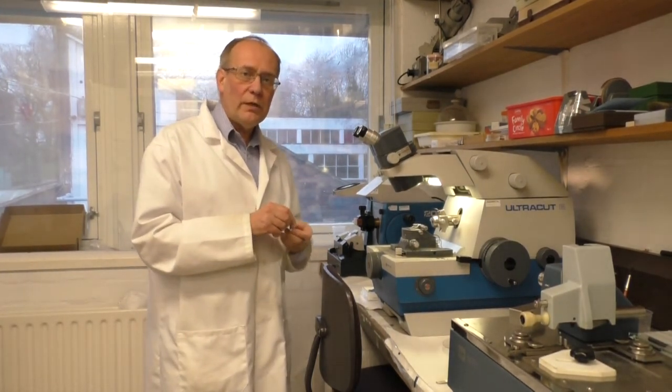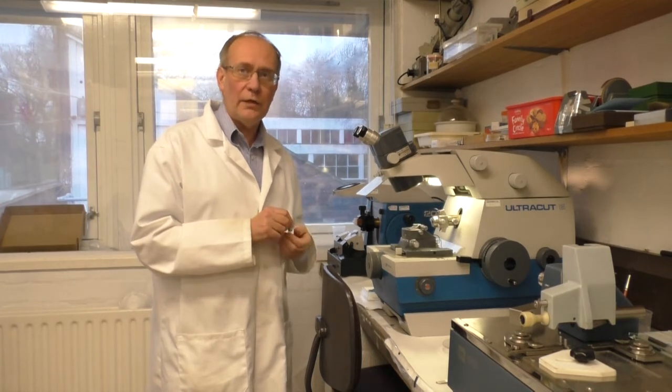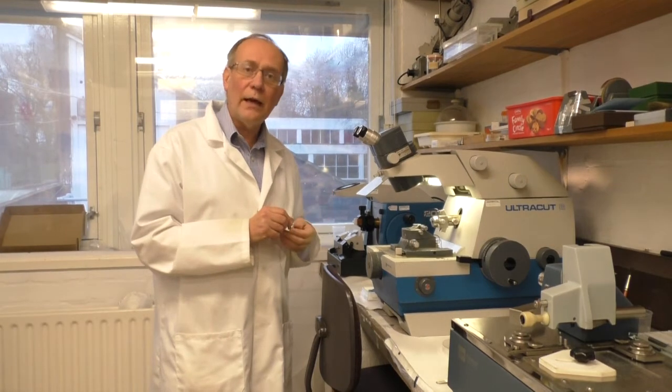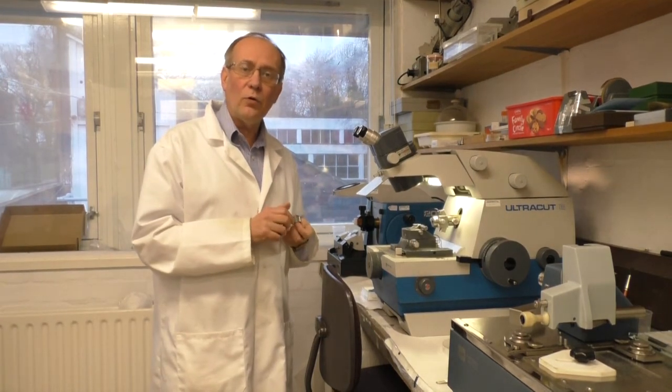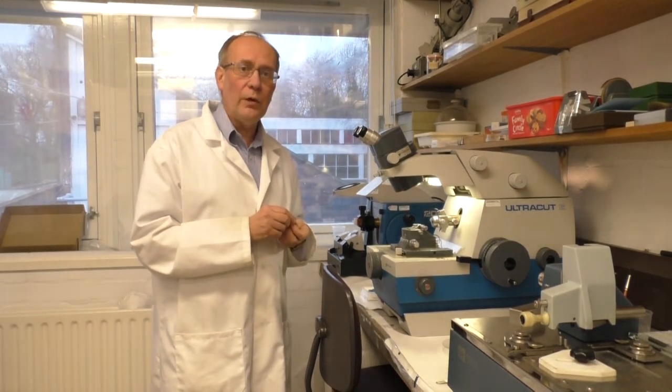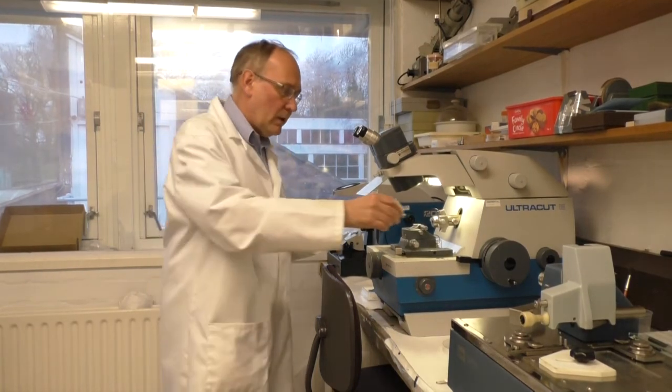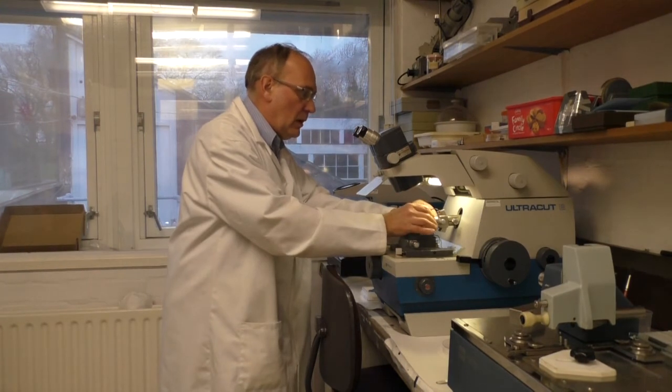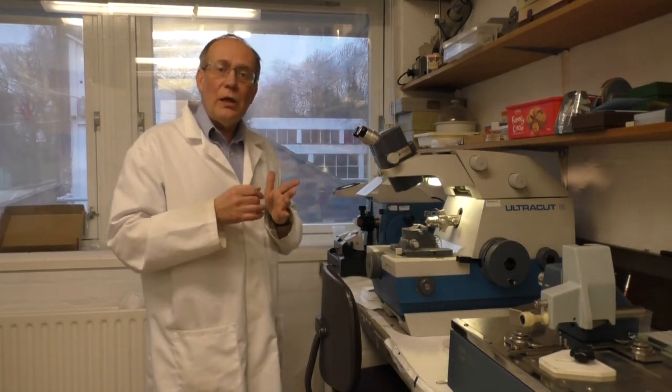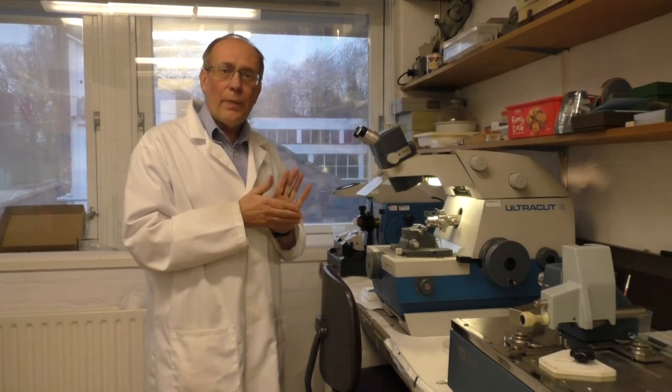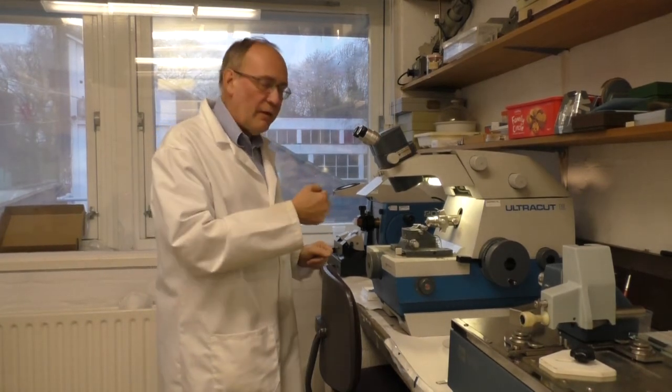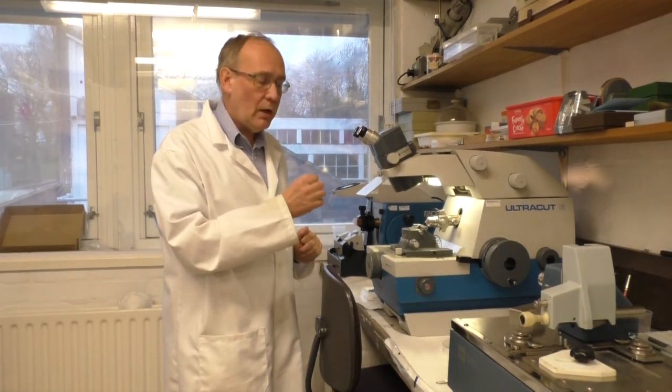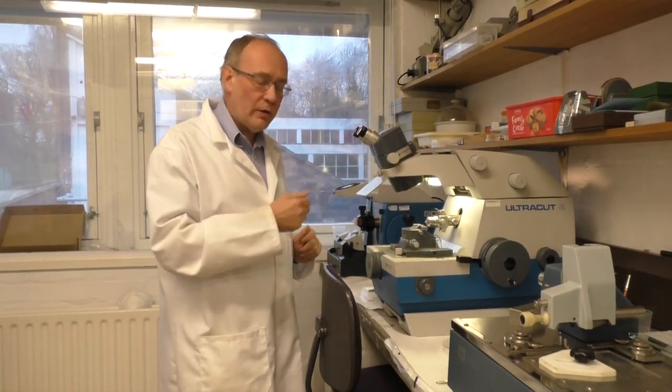The ultramicrotome is designed to cut ultrathin sections, and the sections need to be that thin, about 70 to 100 nanometres, in order for an electron beam to travel through them, and to observe the section of the material. So I place the chuck in here, tighten it up, and then the process needs to be aligned, so that I can take a knife right close to the edge of the resin block where the sample is, and then use that knife to cut the sections.